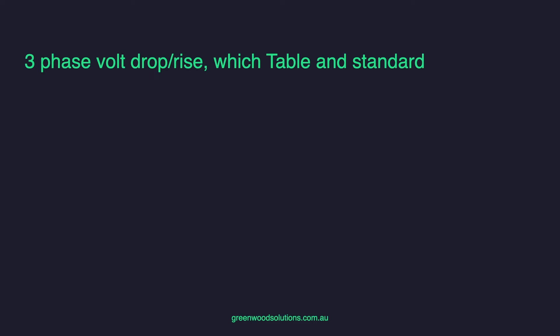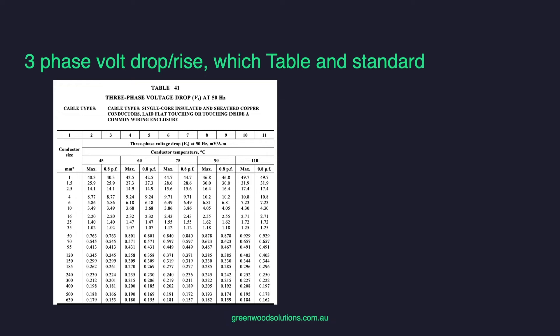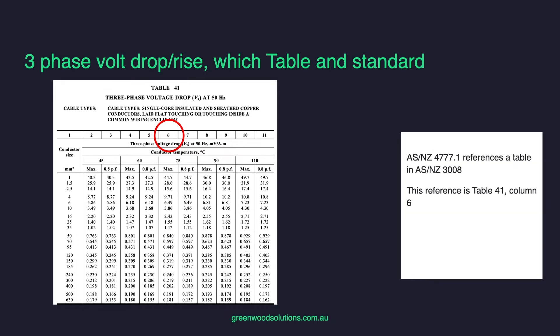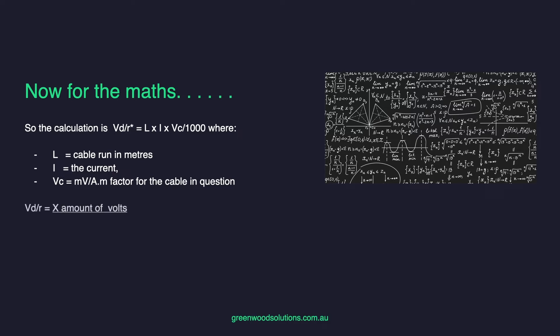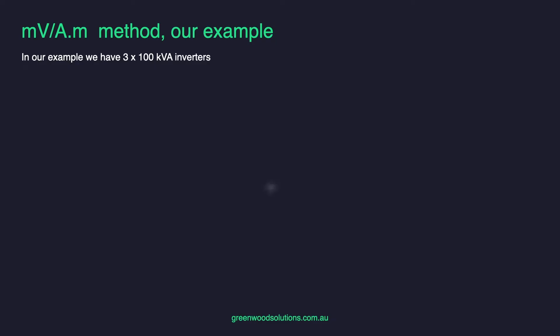AS4777.1 references a table in AS3008 — you've got to know AS3008. This reference is Table 41, column 6, as you can see in the table below. The calculation is: V rise equals L times I times VC, divided by 1000. Where L is the cable run in metres, I is the current, and VC is the millivolt per amp metre factor for the cable in question. The volt rise result is in volts, and volt rise and volt drop are mathematically the same calculation.